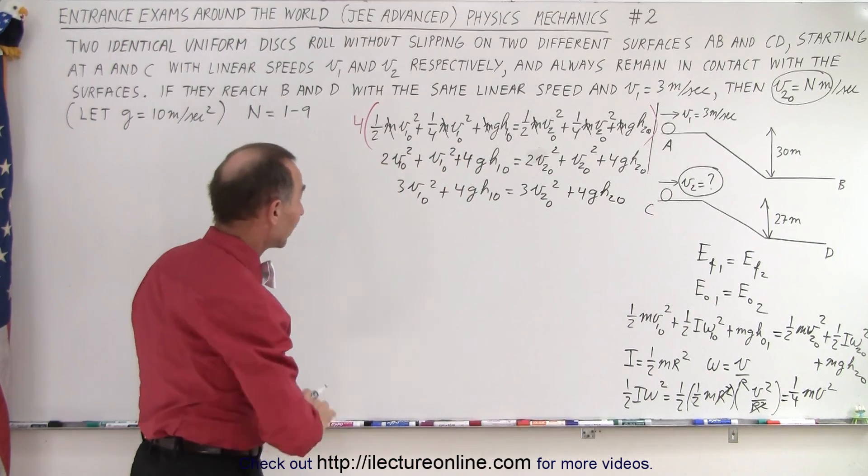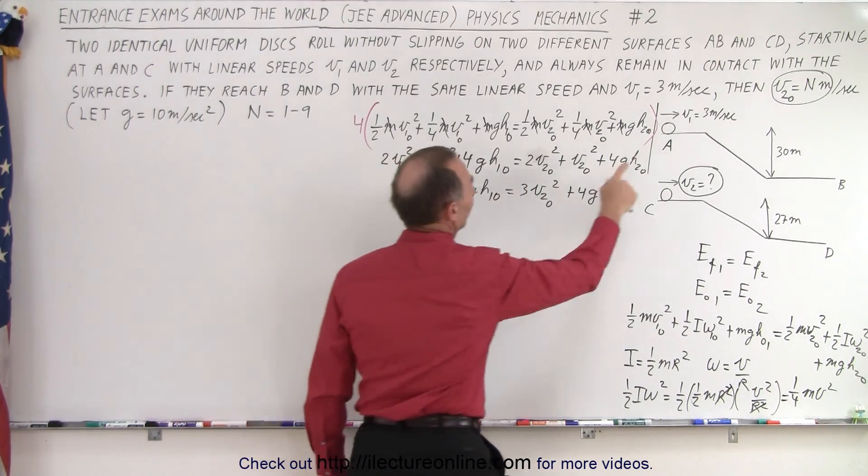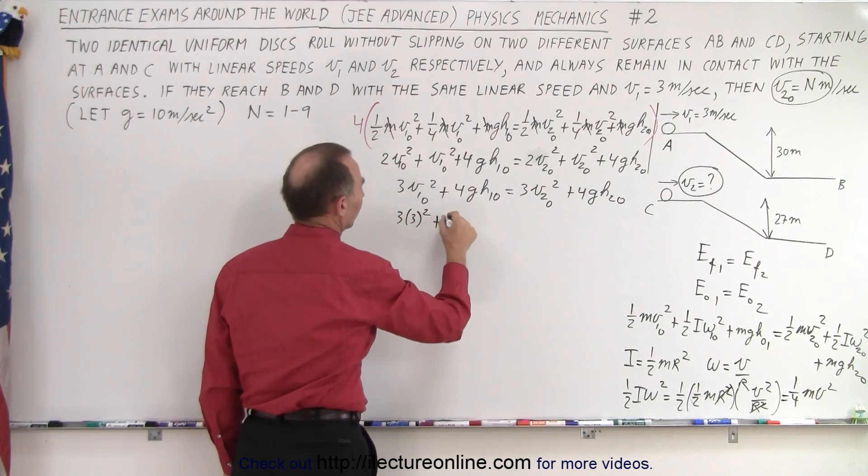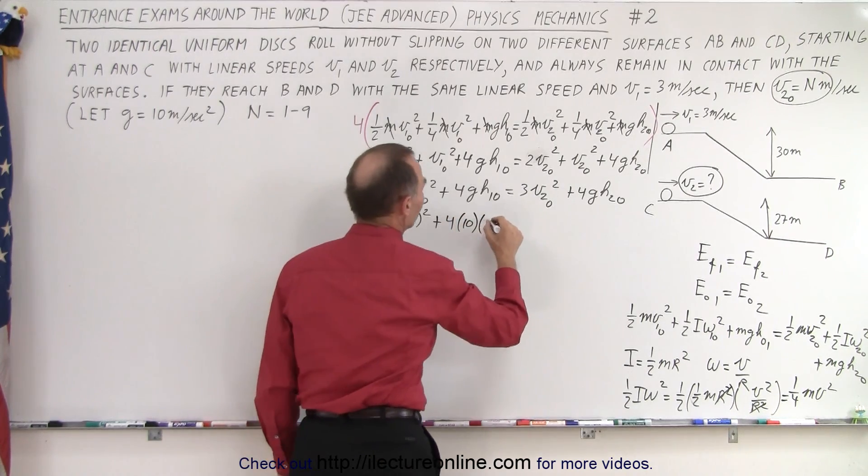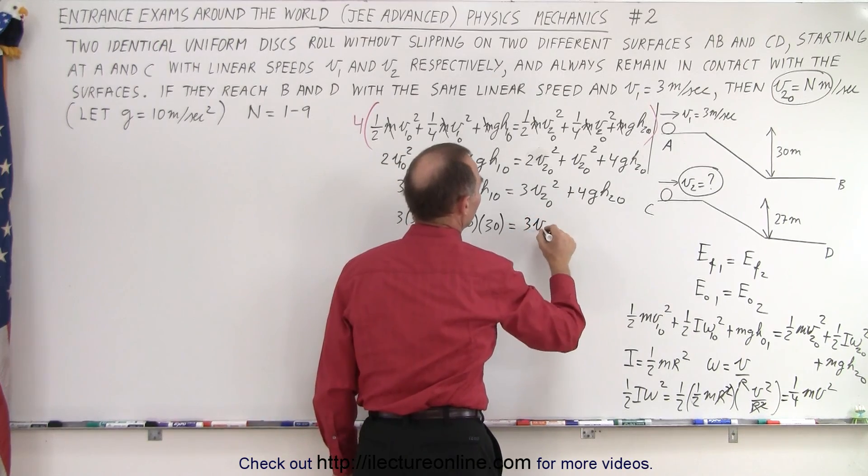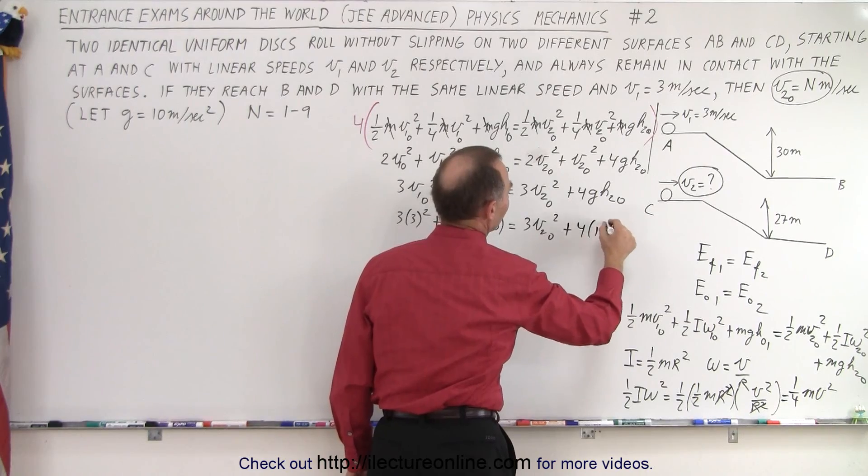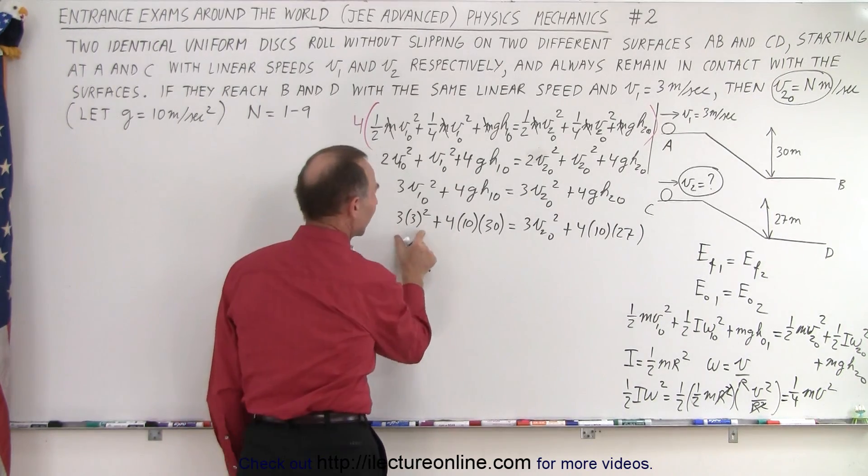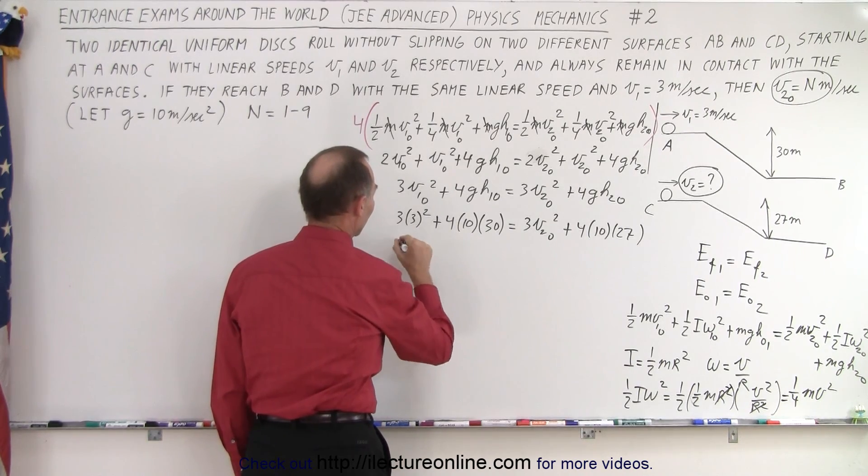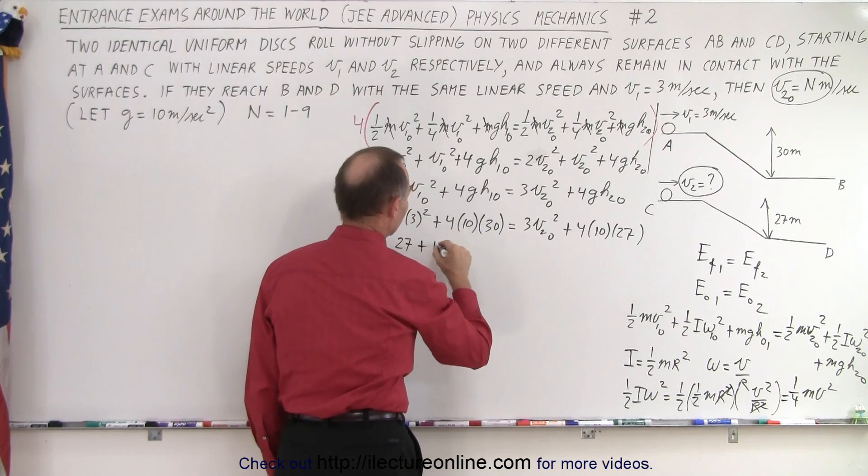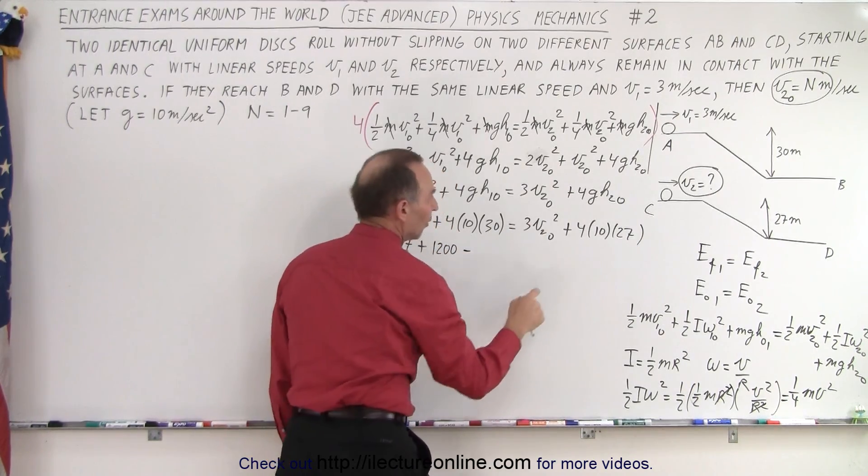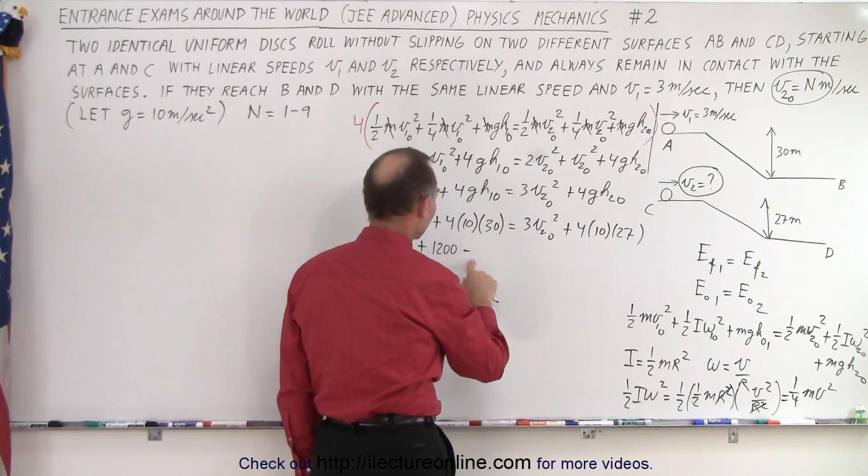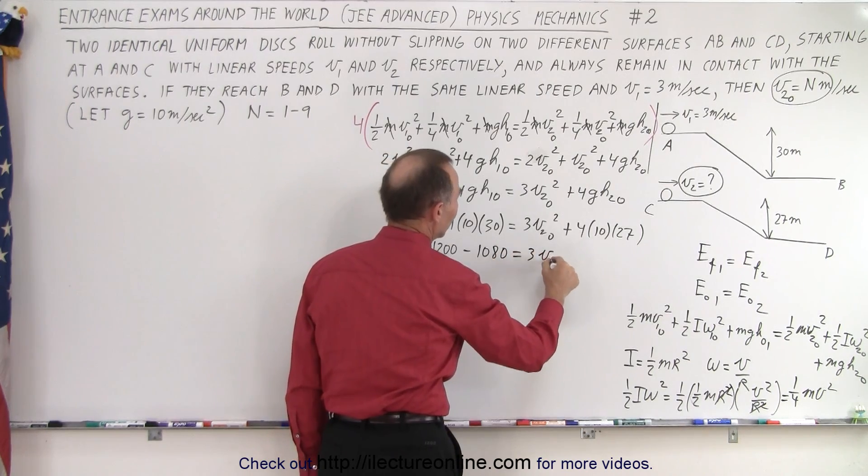We know that v1 initial is 3, so that would be 3 squared times 3. I'll go ahead and do the substitution. So plus 4 times g which is 10 times h1 initial which is 30 is equal to 3 v2 initial squared plus 4 times 10 times 27, because the height is less for the second one. All right, so now we'll multiply everything out and move all the numbers to one side. So this is 9 times 3 is 27 plus 300, that's 1200, and then we'll bring this across minus 40 times 27. So that would be, well, 40 times 30 minus 10%, that would be 1200 minus 120, that would be 1080, is equal to 3 times v2 initial squared.